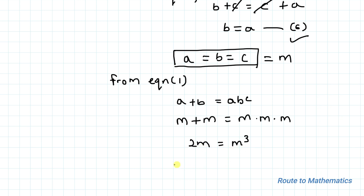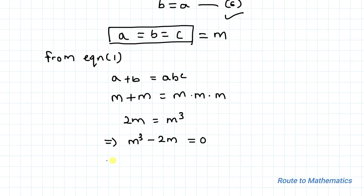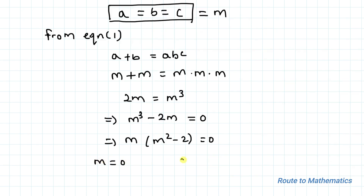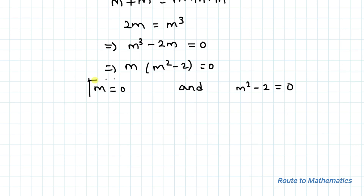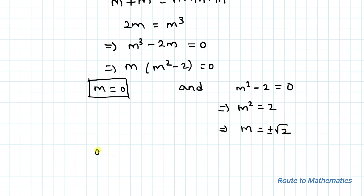Taking 2m to the right-hand side: m cubed minus 2m equals 0. Taking m as a common factor: m times (m squared minus 2) equals 0. From this, m equals 0, or m squared minus 2 equals 0, giving m squared equals 2. Taking the square root of both sides: m equals plus or minus root 2. Therefore, a equals b equals c equals 0, or root 2, or minus root 2.